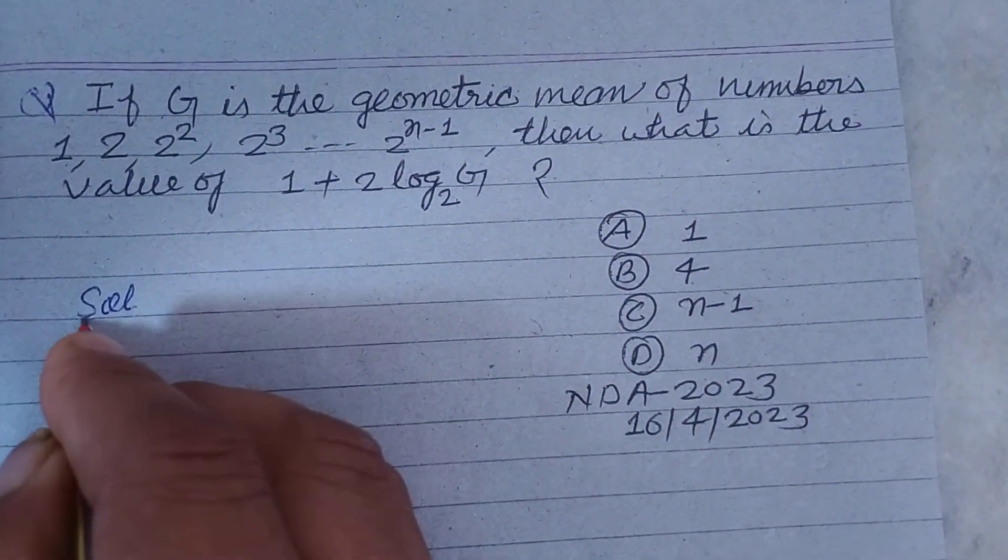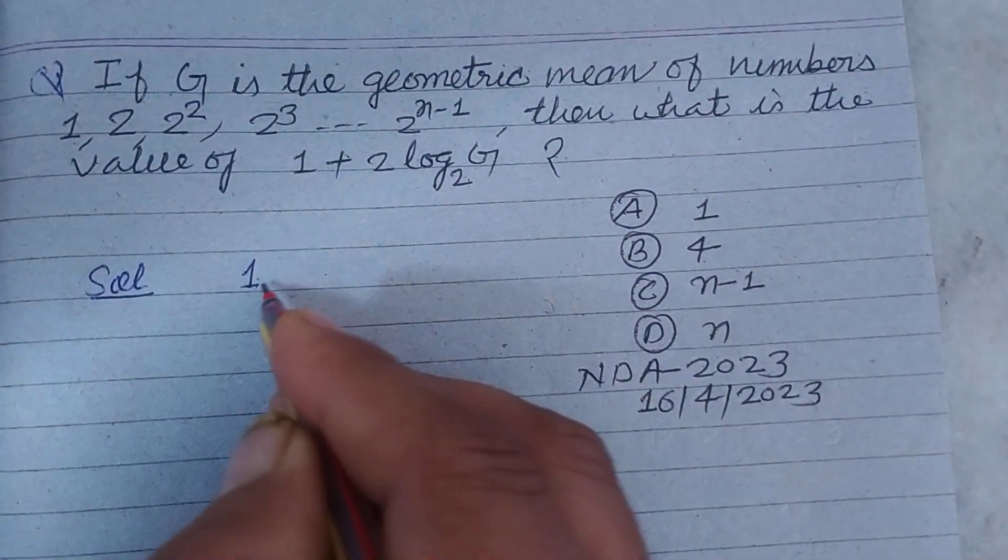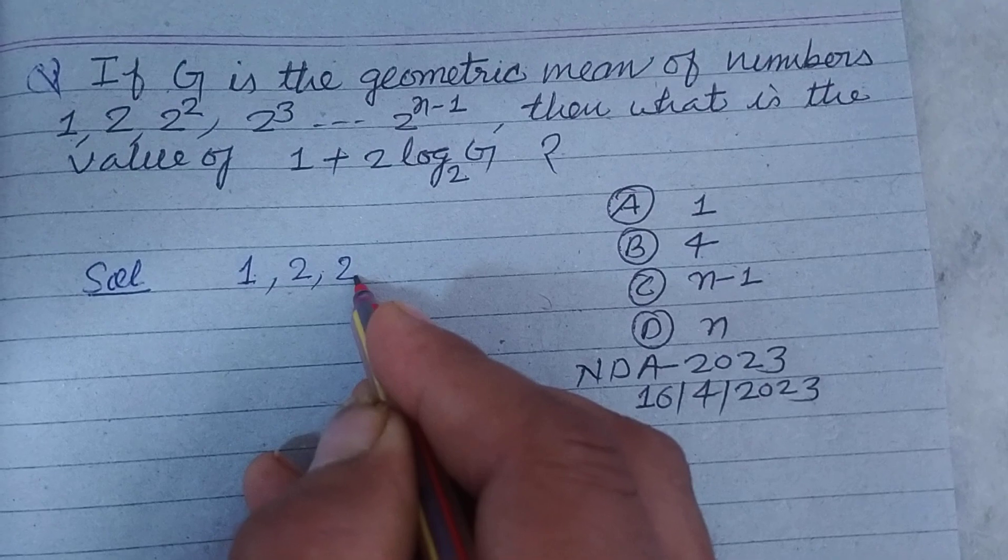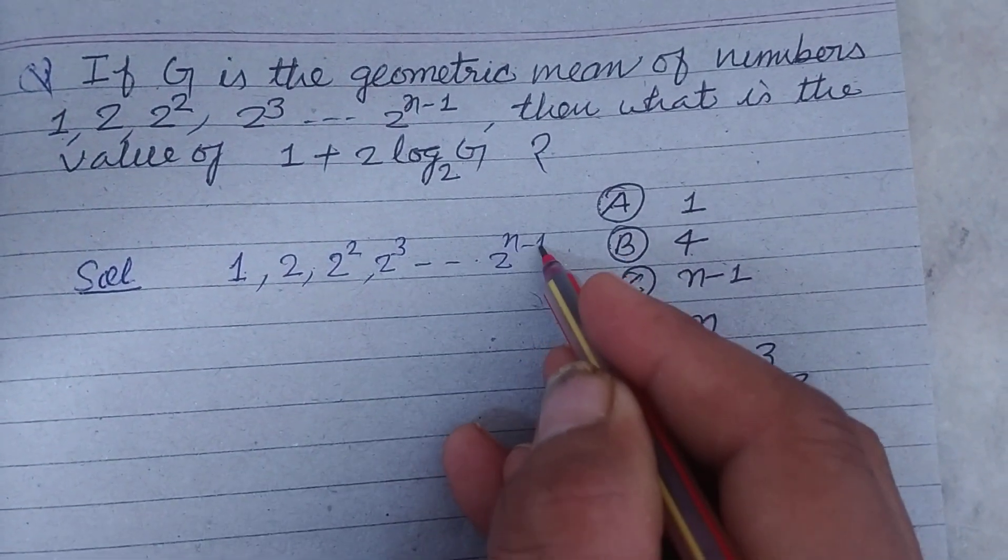So student, here geometric sequence is given: 1, 2, 2 square, 2 to the power 3, and 2 to the power n minus 1.